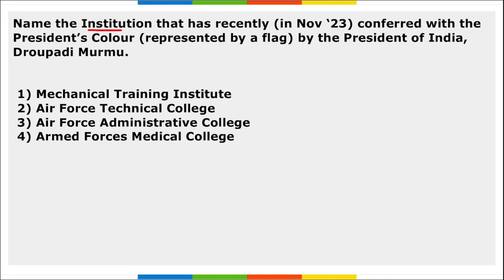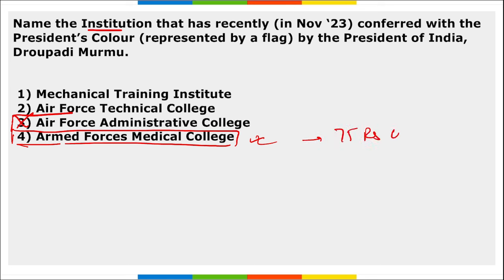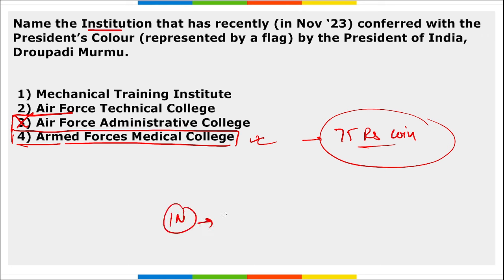Next revision question: Which institution was recently conferred with the President's Colour by President Droupadi Murmu? It is Armed Forces Medical College. To commemorate AFMC's platinum jubilee year, the President also released a commemorative coin of Rs. 75. Remember: Indian Navy was the first institution to receive the President's Colour in 1951. The President's Colour award ceremony is presided over by the President of India, who is the Supreme Commander of Armed Forces under Article 53 of the Constitution.